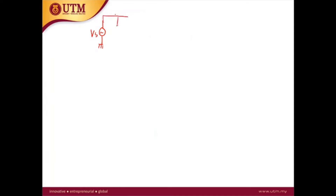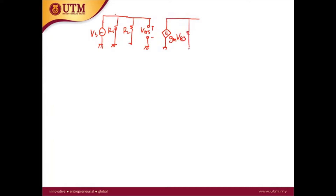In the mid-band equivalent circuit we have R1 and R2 at the input, then VGS, the dependent current source gm*VGS, RD, and finally RL. This is the equivalent circuit at mid-band. RL is known — its value is 3 kilohms.